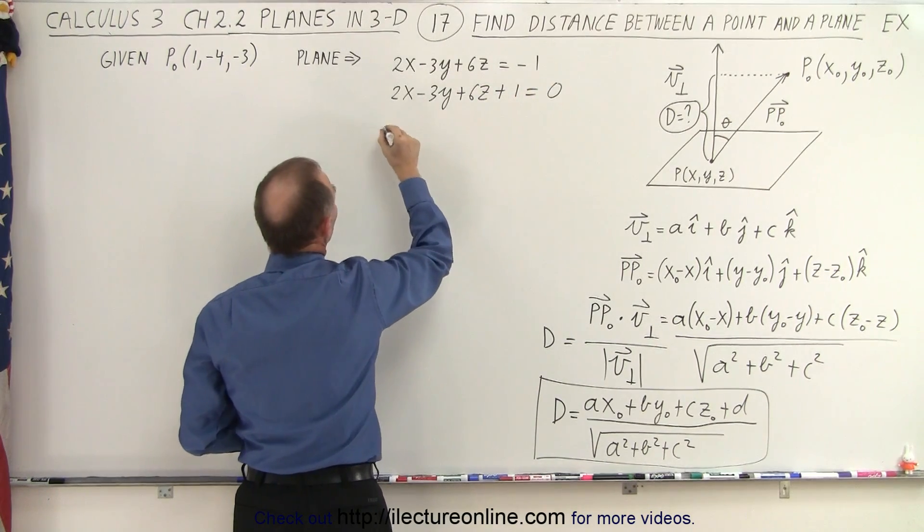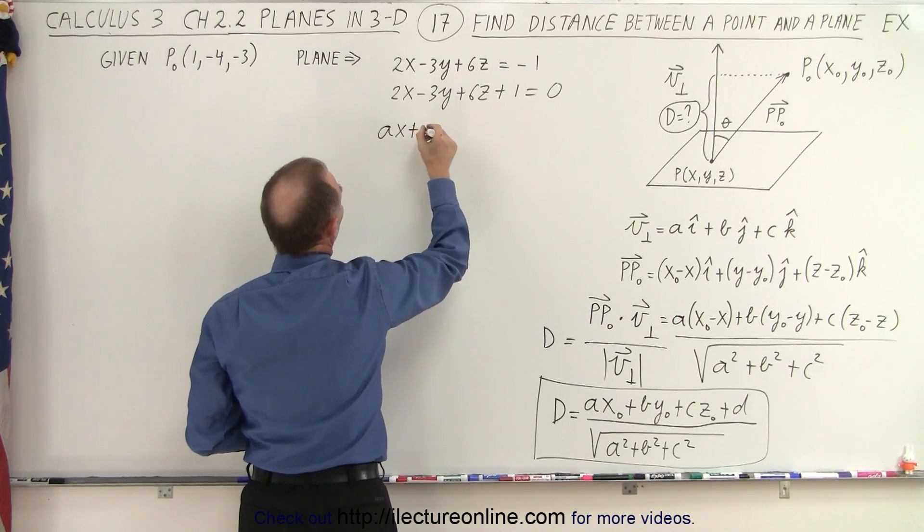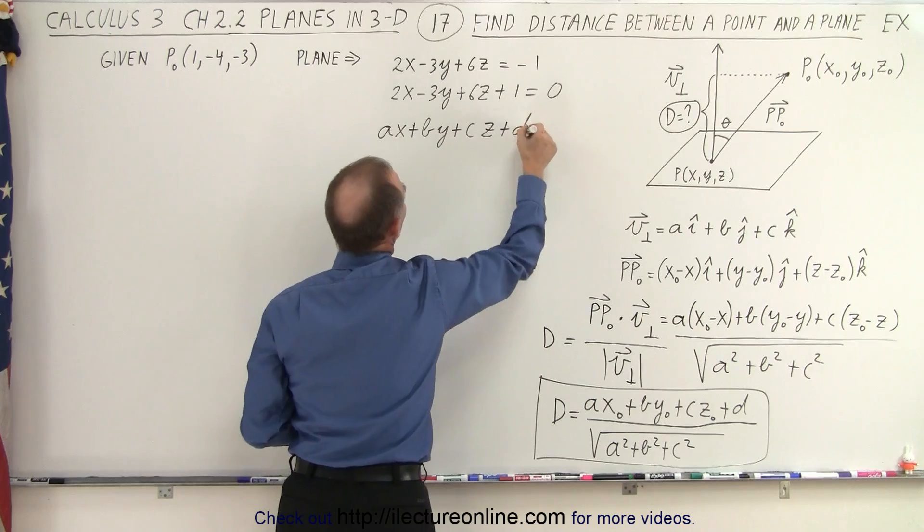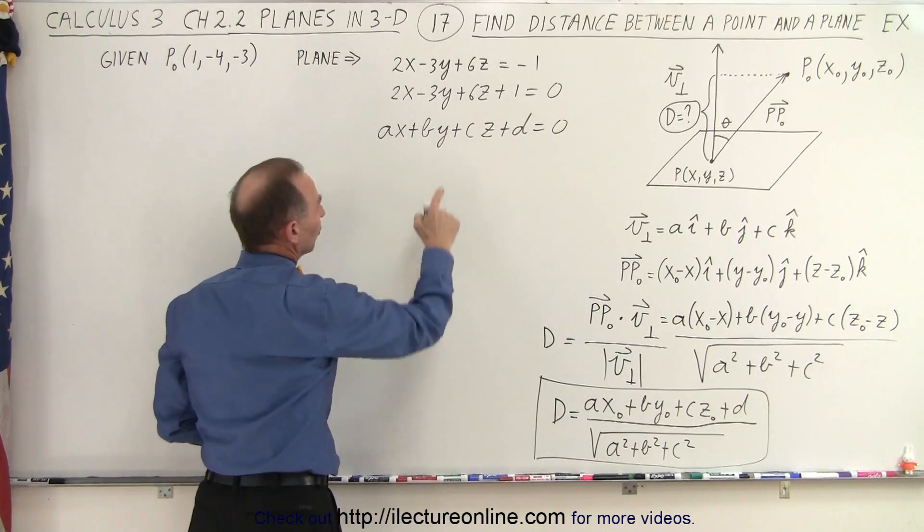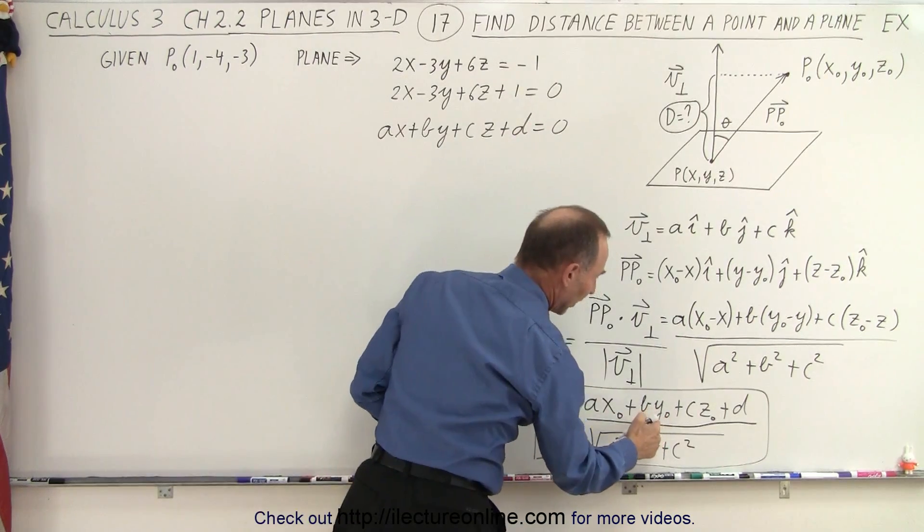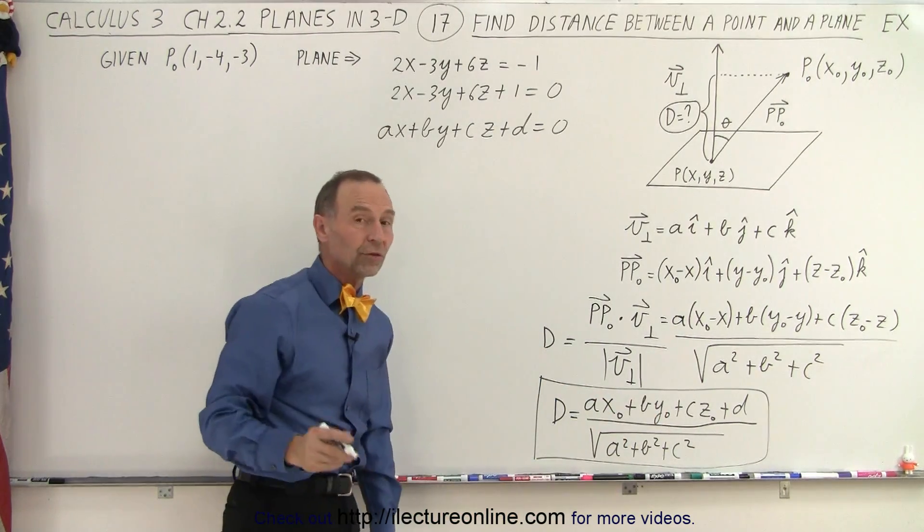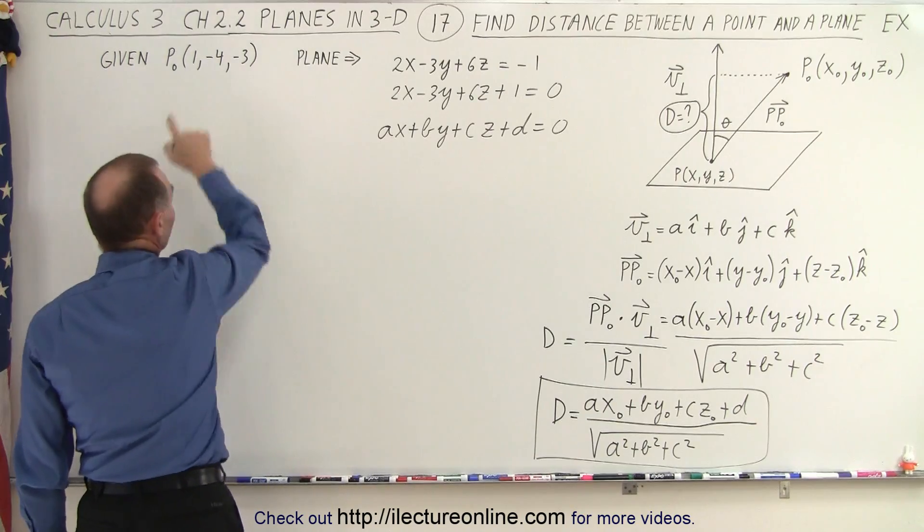And so the general equation looks like this: ax plus by plus cz plus d equals 0. And notice that this is the numerator in our equation except instead of x, y, and z we're going to plug in the actual coordinates of the point that's given which is right over here.